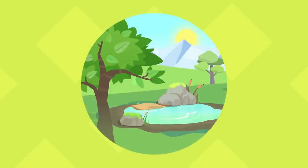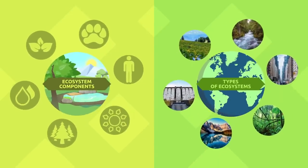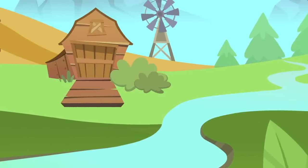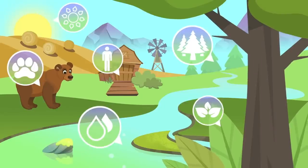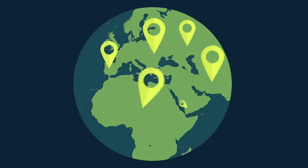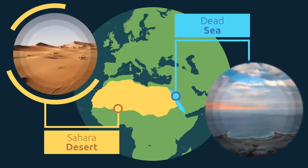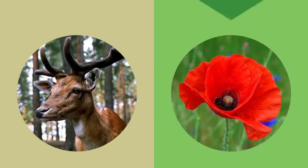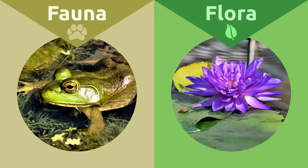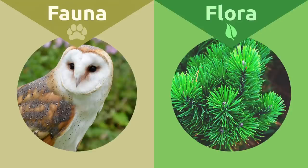Today we're going to learn what an ecosystem is, its components, and the different types found on earth. An ecosystem is the community of living organisms and the natural resources of the environment in which they live. Ecosystems are found in different parts of the planet — they can be very big, like the Sahara Desert, or much smaller, like the Dead Sea. The flora and fauna of each ecosystem have adapted to live according to the characteristics and resources of their surroundings, and the interaction among them defines the ecosystem and its coverage.